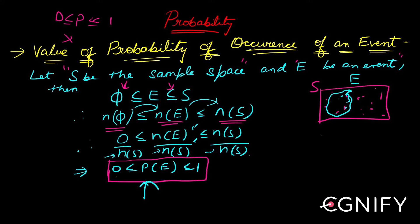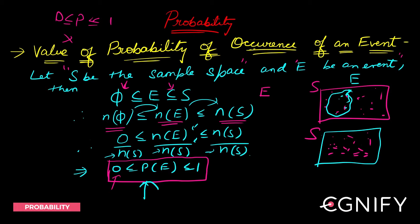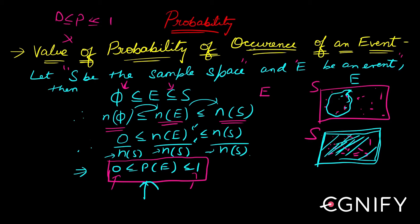The probability will be 0 when what you want does not lie in the sample space at all — if event E contains none of the outcomes in the sample space, P(E) = 0. It will be 1 when your event E is basically the sample space itself, meaning you're taking all possible cases. Anything other than these two extremes gives a probability strictly between 0 and 1. That is why the probability of any event satisfies 0 ≤ P(E) ≤ 1.